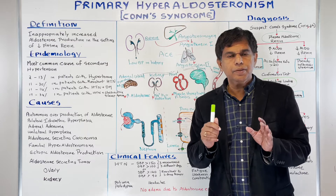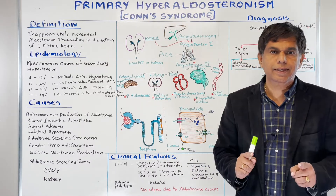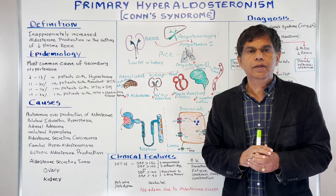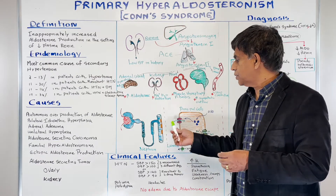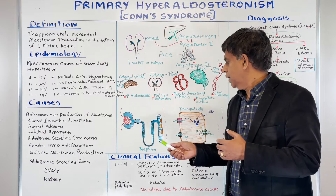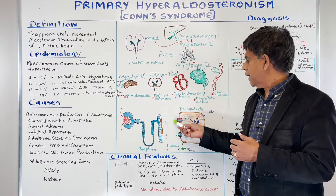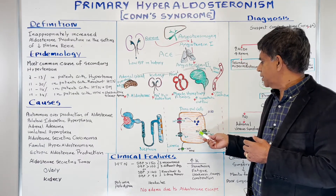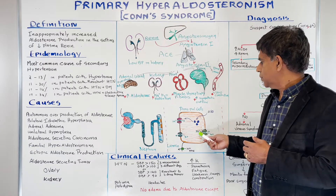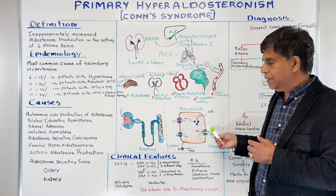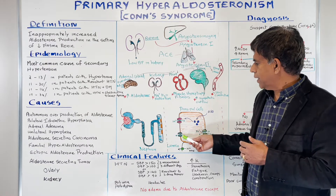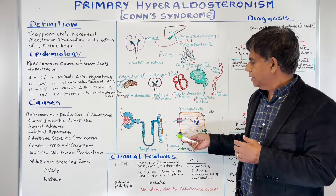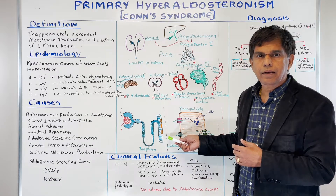In the kidney, specifically the principal cells of the collecting duct, aldosterone acts on amiloride-sensitive sodium channels. Sodium gets reabsorbed into the cell, and the sodium-potassium ATPase pump is activated. Sodium gets reabsorbed into the blood, and potassium gets secreted into the urine via the potassium channel, resulting in hypokalemia.